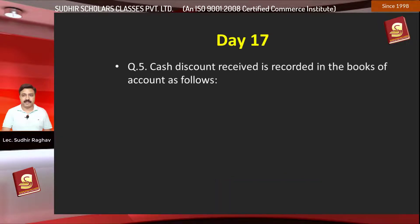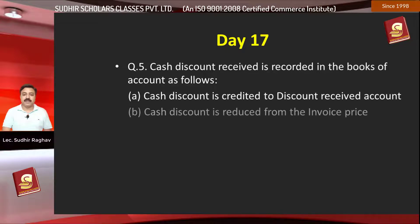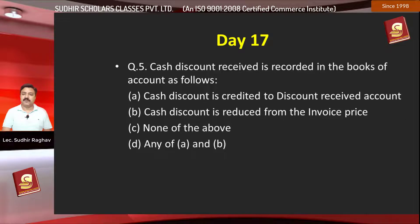Question number 5: Cash discount received is recorded in the books of account as follows. Option A, cash discount is credited to discount received account; Option B, cash discount is reduced from the invoice price; Option C, none of the above; Option D, any of A and B. The right answer is option A.